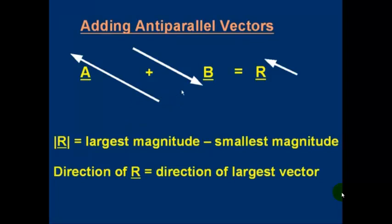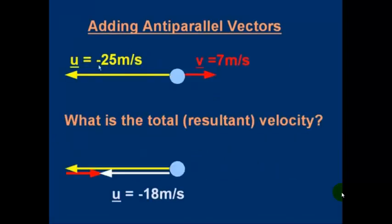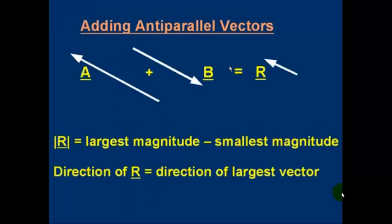Here's a general rule for adding anti-parallel vectors. Here's A, here's B anti-parallel to it, and that's the resultant. How do we find the magnitude of the resultant in the direction? Well, the magnitude of the resultant is simply the largest magnitude of A and B minus the smallest magnitude. Go back a slide. The largest magnitude is the 25. Ignore the minus sign, it's the magnitude. Magnitudes are positive. So the largest magnitude is 25 because it's bigger than 7. 7 is the smallest magnitude. So the largest magnitude minus smallest magnitude gives us 25 minus 7, which is 18. So the magnitude of the resultant is largest minus smallest magnitude.